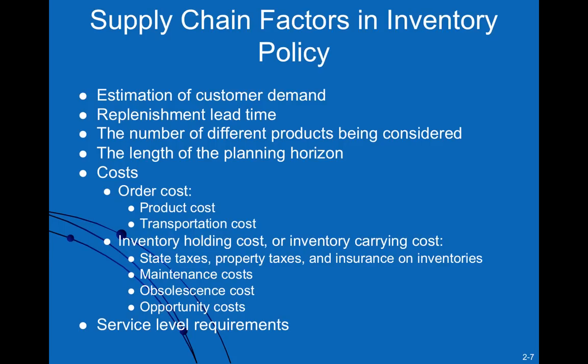Making inventory decisions is complicated by cases where multiple types of products share containers. If you're ordering a single container and have multiple products to order, and the optimal quantities of all these products exceed the total capacity of that container, you have to figure out a way of adjusting the optimal quantities to fit the container load while still optimizing costs at the same time.